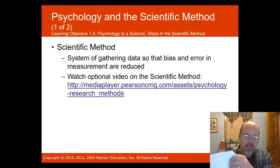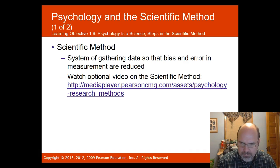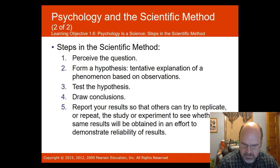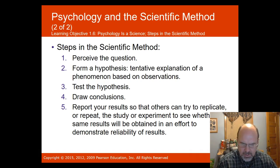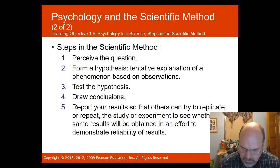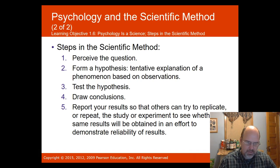The scientific method is our process for gathering data so that bias and error in measurements are reduced. It accomplishes the four goals: description, explanation, prediction, and control. The steps are: perceive the question, form a hypothesis, test the hypothesis, avoid confirmation bias by repeating research, draw conclusions about whether the hypothesis is supported, and report results so others can replicate the experiment. Results are published in peer-reviewed academic journals — such as those from the ACA or APA — which are far more reliable than general internet sources.